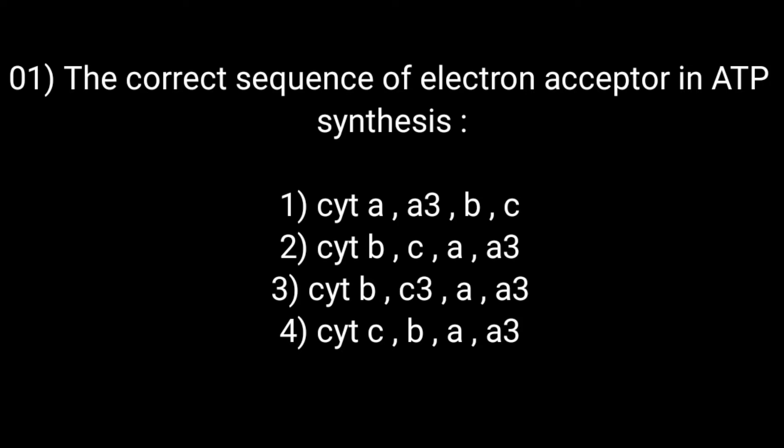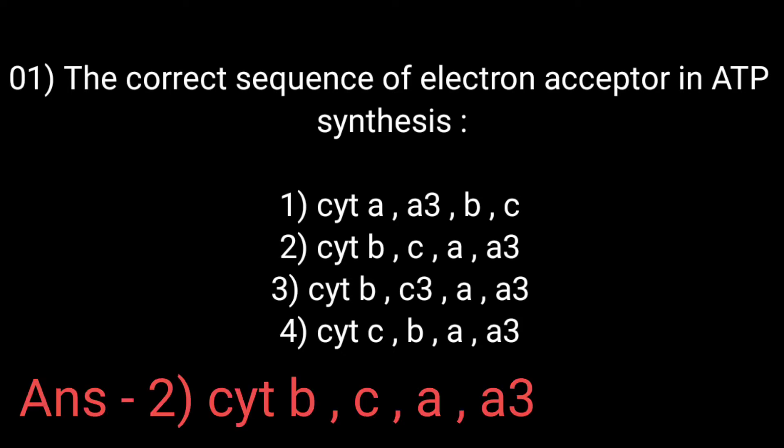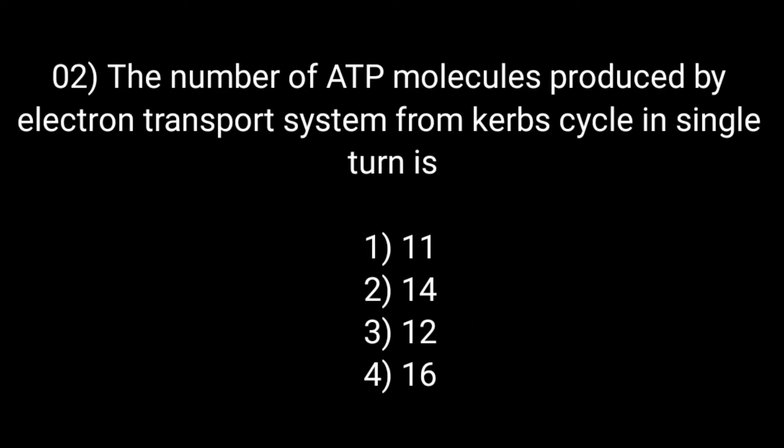Option third: cytochrome B, C3, A, A3. Option fourth: cytochrome C, B, A, A3. The correct answer is option number second: cytochrome B, C, A, A3. The number of ATP molecules produced by the electron transport system from the Krebs cycle in a single turn is: